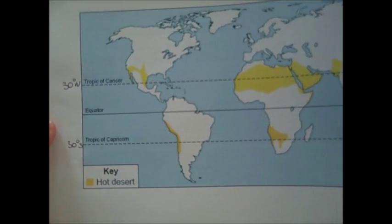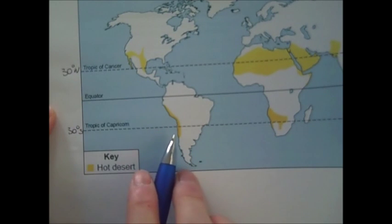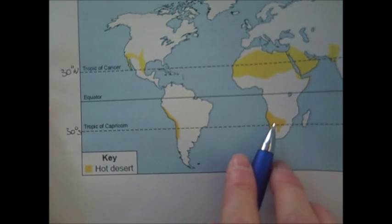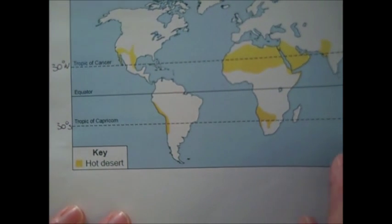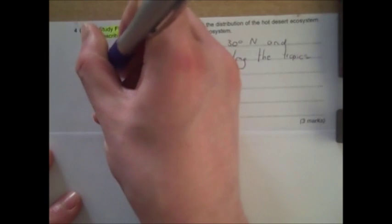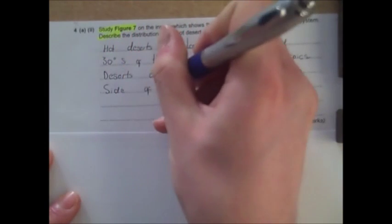Going back to figure 7 and looking at the patterns, I can see that deserts are located on the western side of continents — this is South America, this is Africa, and we've also got Australasia down here. So my second point: the deserts are located on the western side of the continents.